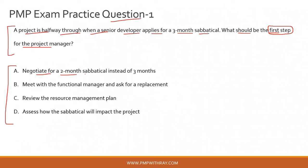Option A: negotiate for a two-month sabbatical instead of three months. This is outright incorrect. On what basis would you negotiate? You first need data to negotiate. The senior developer could even say they'd prefer four months, so you have no grounding for a two-month counter. You do not have any data to discuss whether two, three, or four months is appropriate. Option A is outrightly incorrect for this reason.